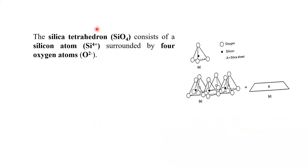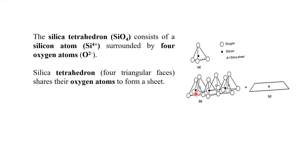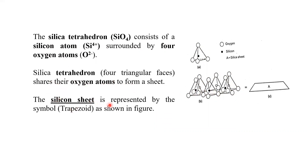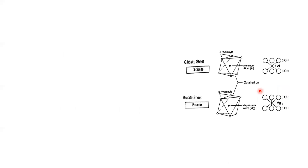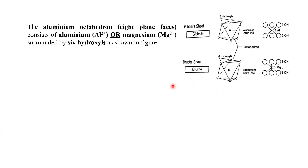The silica tetrahedron consists of a silicon atom surrounded by four oxygen atoms. The silicon sheet is represented by a trapezoid symbol. The silica tetrahedron has four faces and each face connects with the other faces — likewise, clay formation takes place.